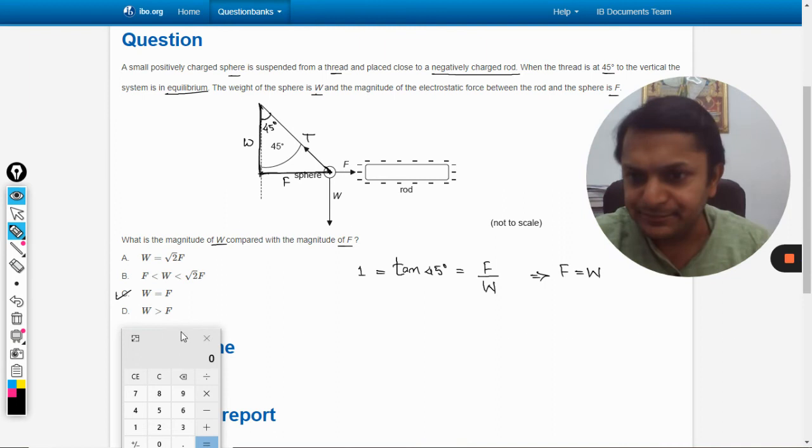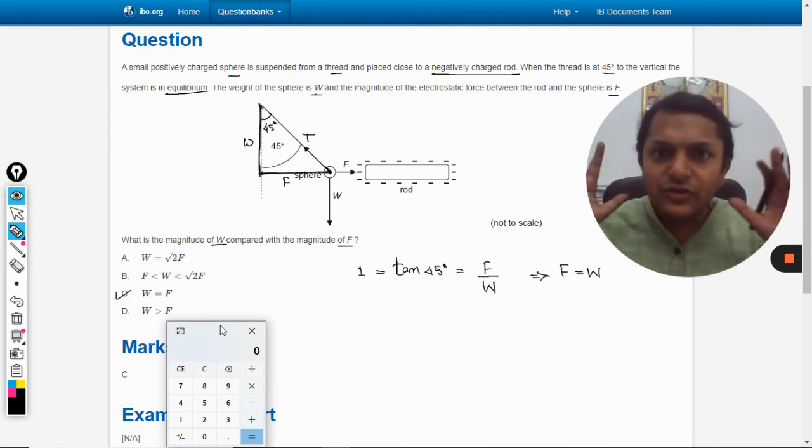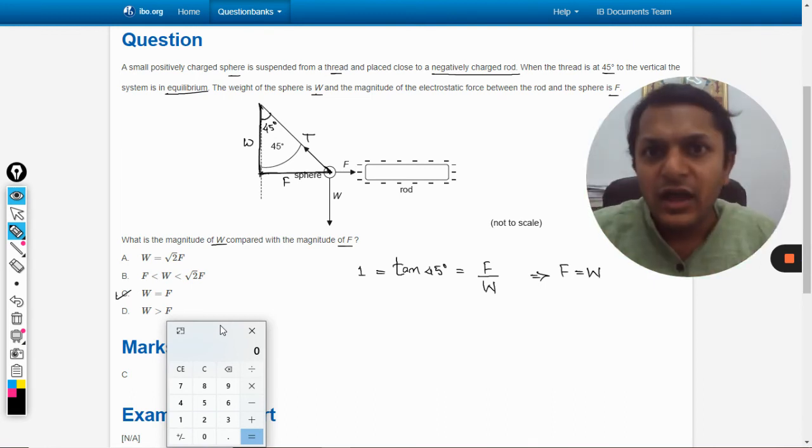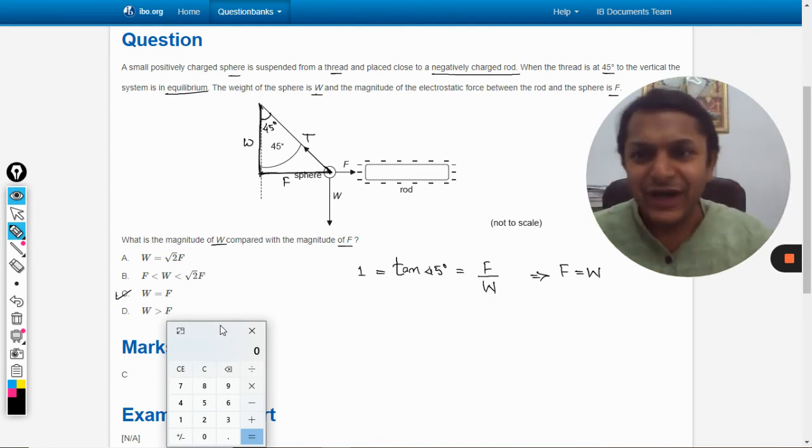In all such questions, try to create this triangle and everything will fall into place. Use sin θ, cos θ, or tan θ depending on the unknown variable, and you'll solve all such questions. All the best, bye.